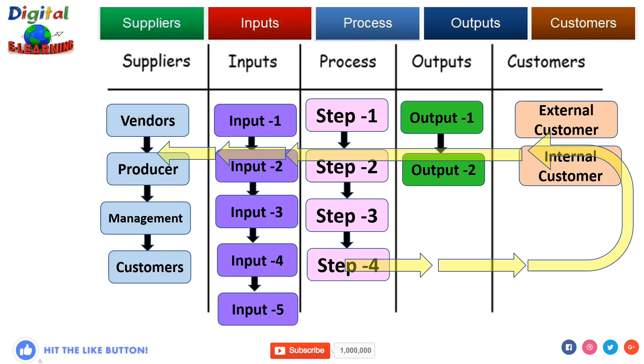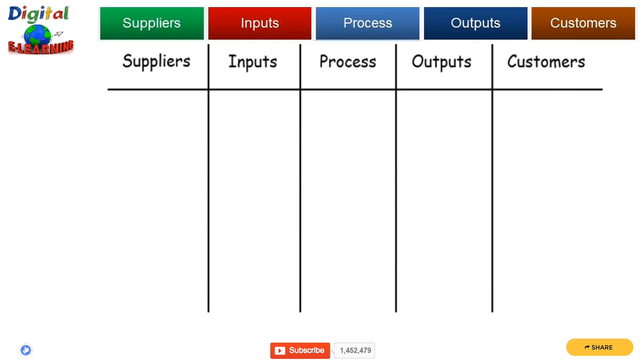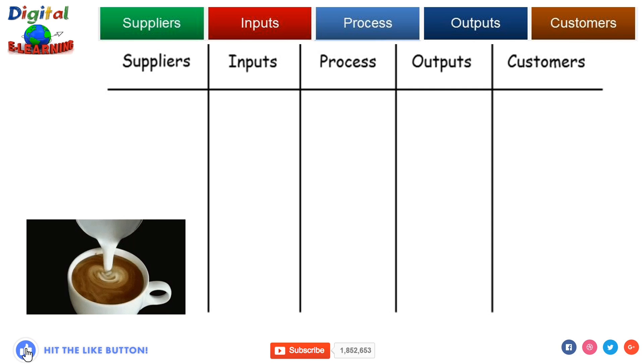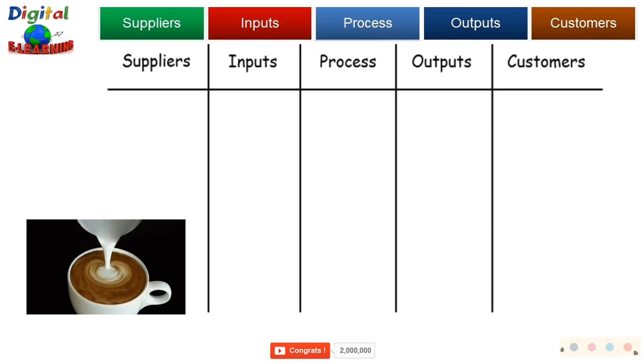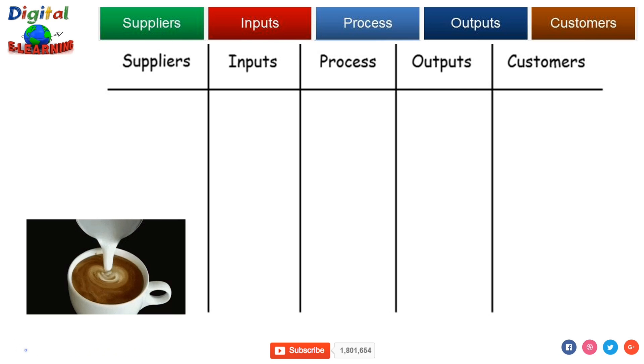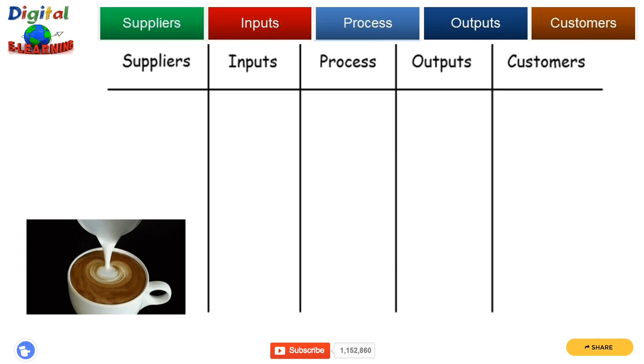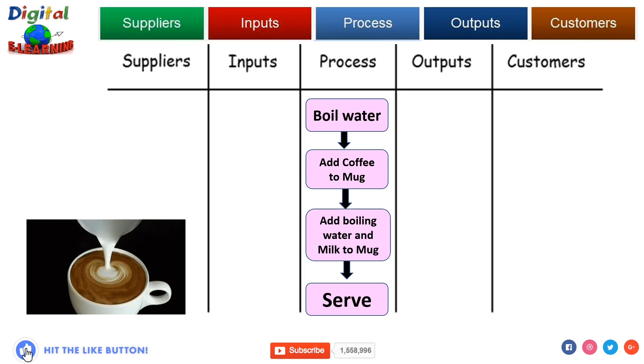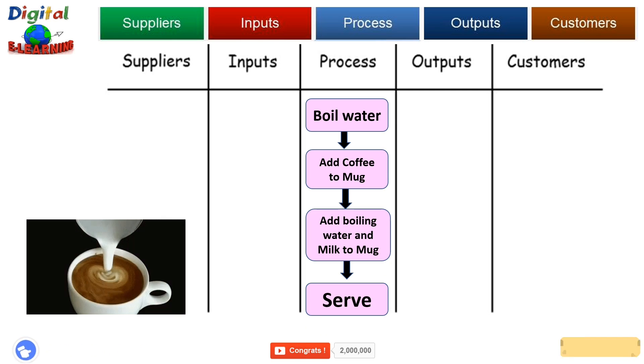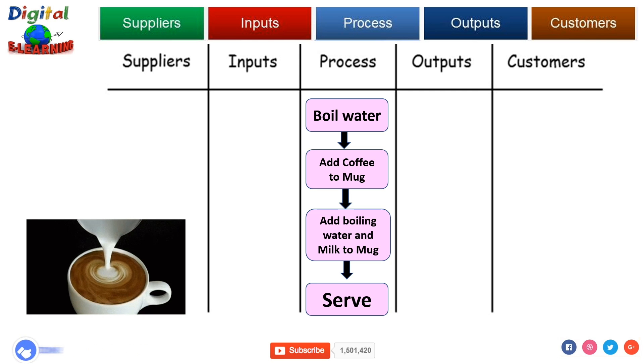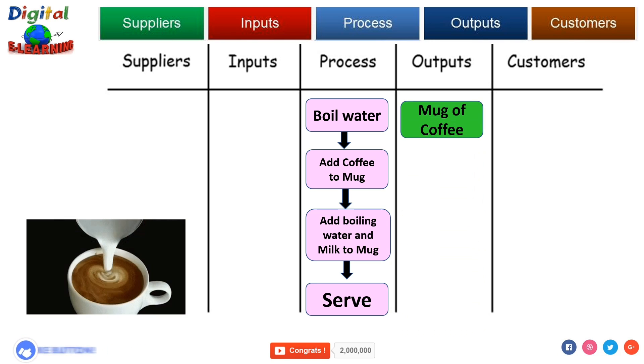Let us take one example here. The task we have is that we will make a coffee and we will use this tool SIPOC. We will start with listing down all the process steps. The process steps in making coffee are: you will boil water, add coffee to mug, add boiling water and milk to mug, and finally when it is ready you serve it. What are the outputs that you will get? A cup of coffee, a mug full of coffee.